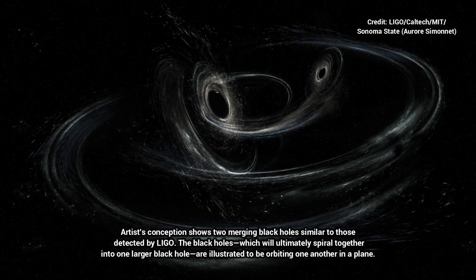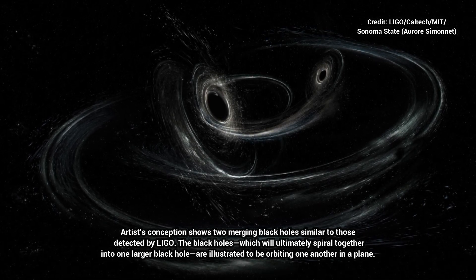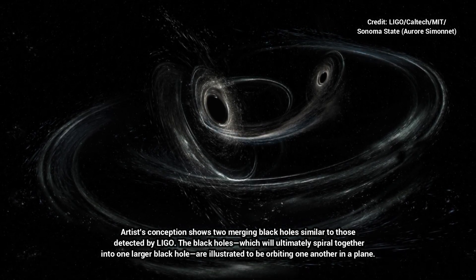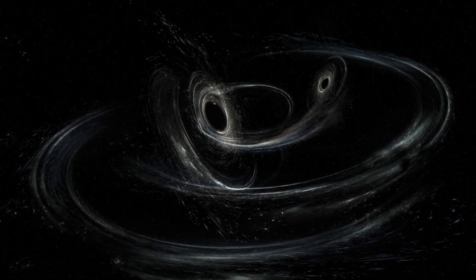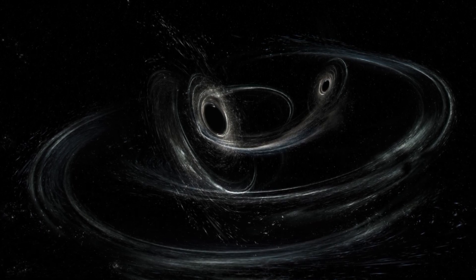In this particular case, the researchers tested a specific prediction of general relativity, that black holes can be fully described by just their mass and rate of spin. Yet again, Einstein passed the test.